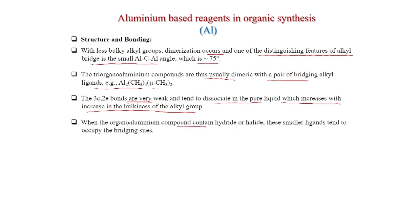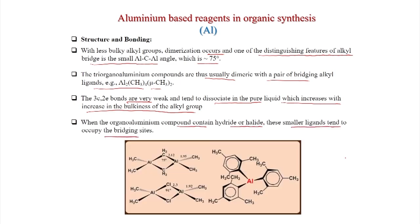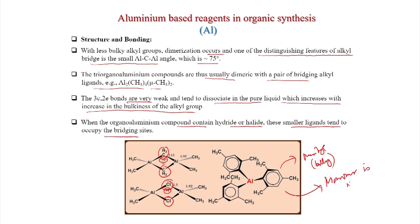Organoaluminum compounds generally feature three- and four-coordinate aluminum centers. Four-coordinate aluminum is typically tetrahedral. Aluminum is larger than boron and can easily accommodate four carbon ligands. With less bulky alkyl groups, dimerization occurs; a distinctive feature is the small Al-C-Al bridge angle of 75°. Triorganoaluminum compounds are typically dimeric with a pair of bridging alkyl ligands, for example Al2(CH3)6 with bridging μ-CH3. With bulky groups like mesityl, the monomeric form is stable because dimerization is prevented.